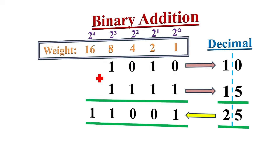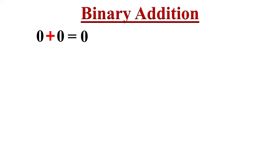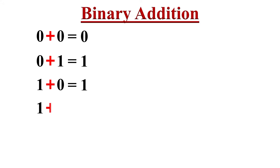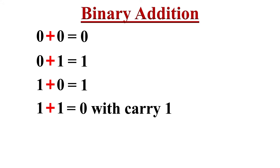The following rules must be followed for binary addition. In binary: 0 plus 0 equals 0; 0 plus 1 equals 1; and 1 plus 0 also equals 1. But 1 plus 1 equals 0 with 1 carried to the next column.